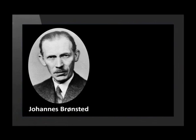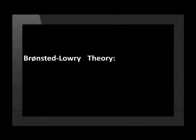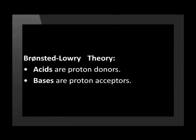Arrhenius' theory of acids and bases remained undisputed until 1923. Then the Danish scientist Johannes Brønsted and the Englishman Thomas Lowry refined Arrhenius' theory. The Brønsted-Lowry definition of acids is very similar to Arrhenius' definition: a Brønsted-Lowry acid is defined as any substance that can donate a proton. Acids are proton donors because an H⁺ ion without its electron is simply a proton. But instead of describing bases as substances that ionize to form OH⁻ ions, the Brønsted-Lowry definition of a base is that a base is a substance that accepts protons.